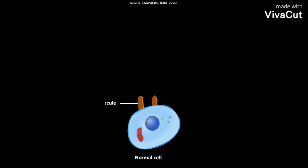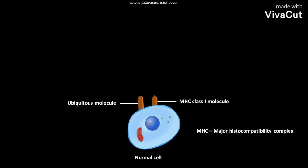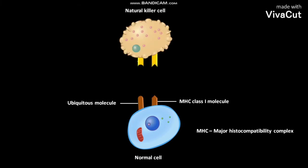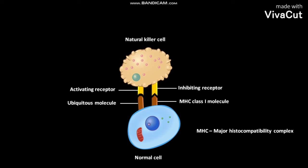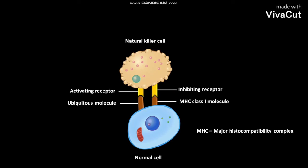The plasma membrane of a normal cell always has both a ubiquitous molecule and an MHC class 1 molecule. MHC stands for major histocompatibility complex. The natural killer cell has a killer activating receptor and a killer inhibiting receptor on its plasma membrane. The killer activating receptor recognizes the ubiquitous molecule, while the killer inhibiting receptor recognizes the MHC class 1 molecule, so the normal cell is not attacked by the natural killer cell.